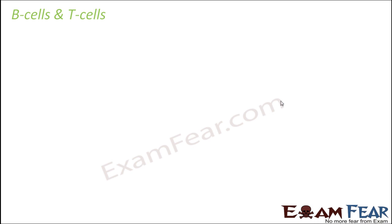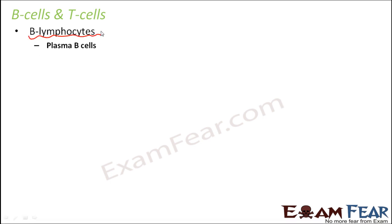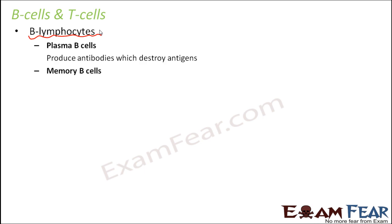Now that we understand antibodies and antigens, it will be easier to understand B cells and T cells — that is, B lymphocytes and T lymphocytes. B lymphocytes are of two types: plasma B cells and memory B cells. Plasma B cells are the ones that primarily produce antibodies to destroy antigens. A specific antibody binds to a specific antigen at the antigen binding site, and that is how the antigen gets destroyed.